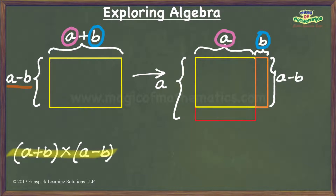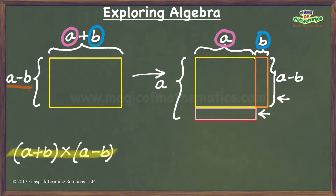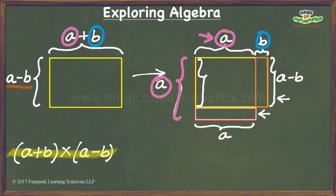Let us now see whether we can fit in this rectangular piece in the rectangular part of the square outline which does not have paper. First, let us find out the dimensions of the rectangular part which does not have paper. Since each side of our square measures a units, this dimension measures a units. Since this measurement is a units and this measurement is b units short of a units, it is clear that this measurement is b units. So the rectangular part which does not have paper yet measures a units by b units.